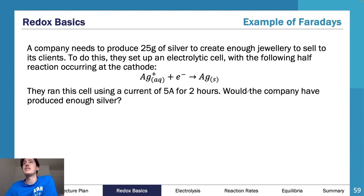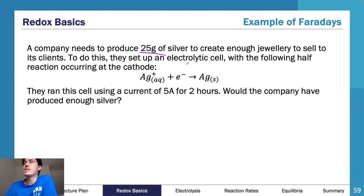Here's a practical exam question: a company needs to produce 25 grams of silver to create enough jewelry for its clients. They set up an electrolytic cell with the following half reaction at the cathode, and run the cell using a current of 5 amps for 2 hours. Would the company have produced enough silver?